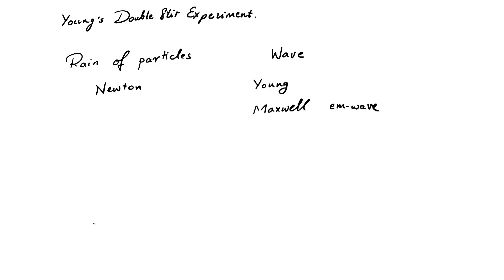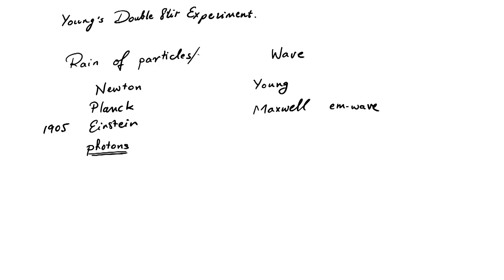But barely two decades later, there were problems with the theory — first with black-body radiation, and then with the photoelectric effect. In quick succession, first Max Planck, and then Einstein in 1905 in his famous paper on the photoelectric effect, posited that light consists of discrete packets of energy, or quanta. These light quanta are what we call photons, which you can think of as particles of light. So these experiments seemed to show that light behaves like a rain of particles, or bullets — a real contradiction between these different phenomena.